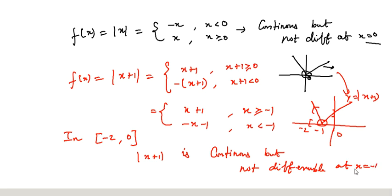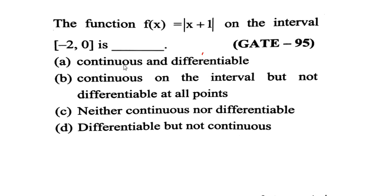A function that is not differentiable at a single point in the interval means the function is not differentiable in that interval. So the first option is not correct because this function is not differentiable everywhere. The answer is B: continuous on the interval but not differentiable at all points.